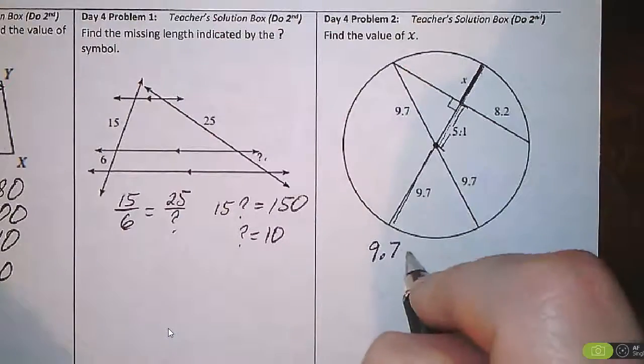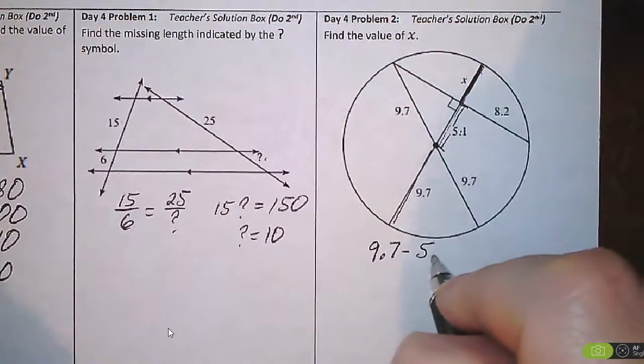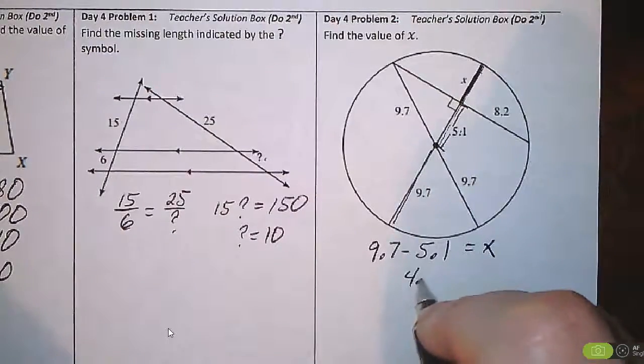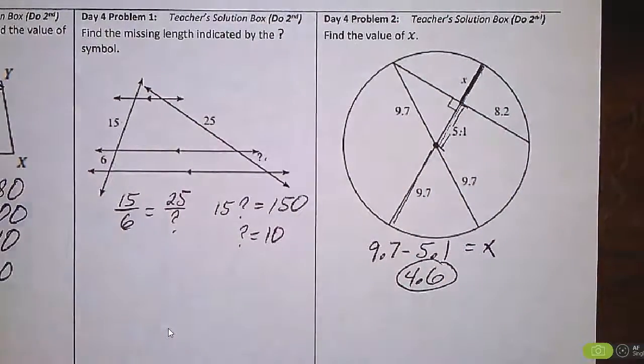So we can go 9.7 take away 5.1. That's going to equal x. This is 4.6.